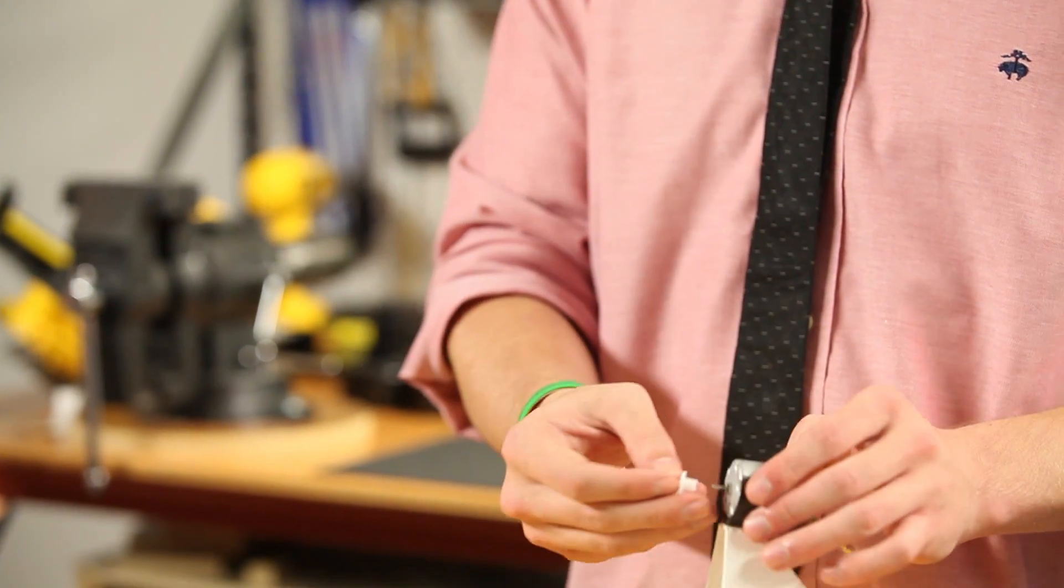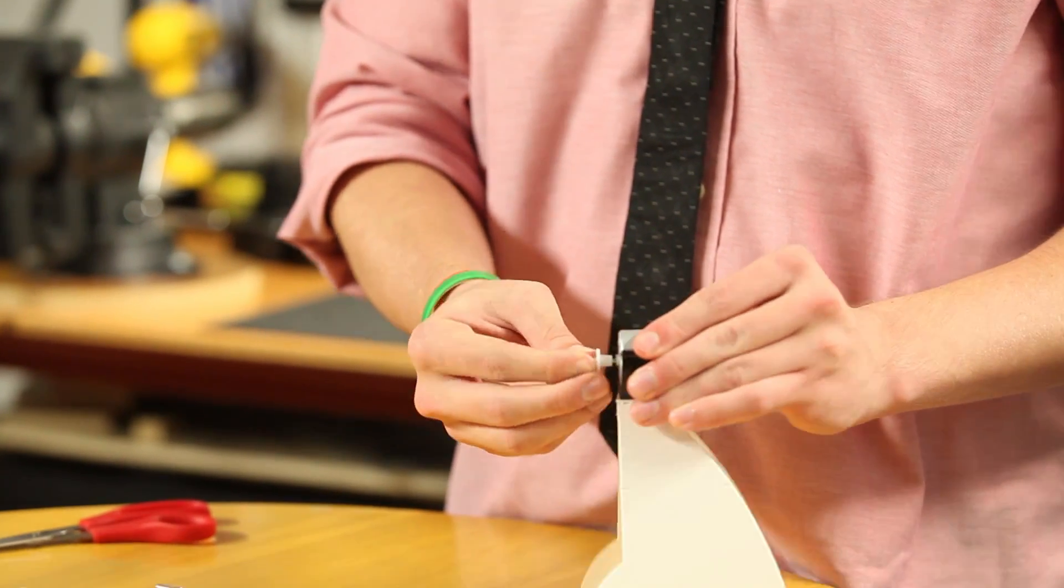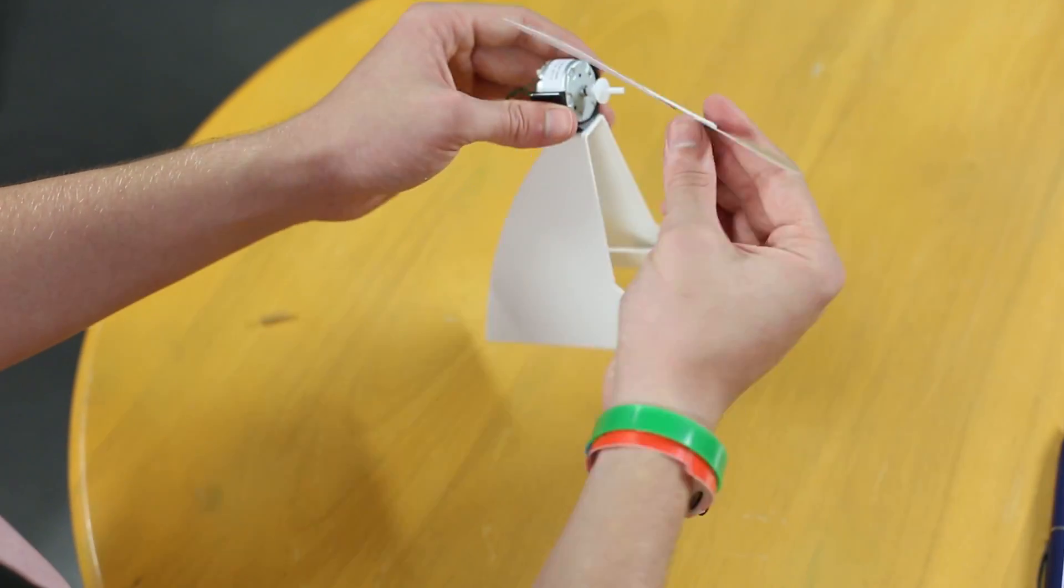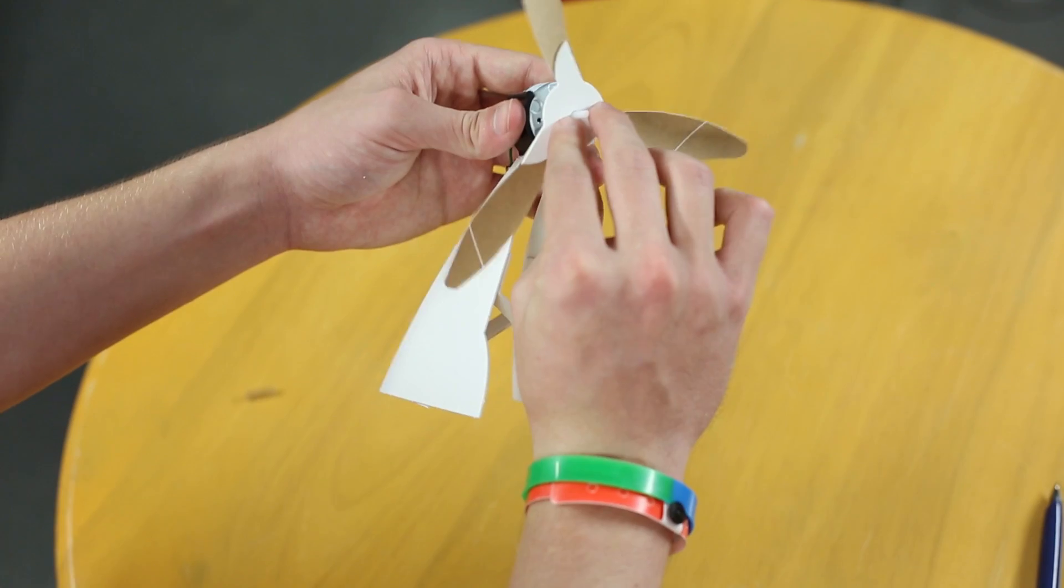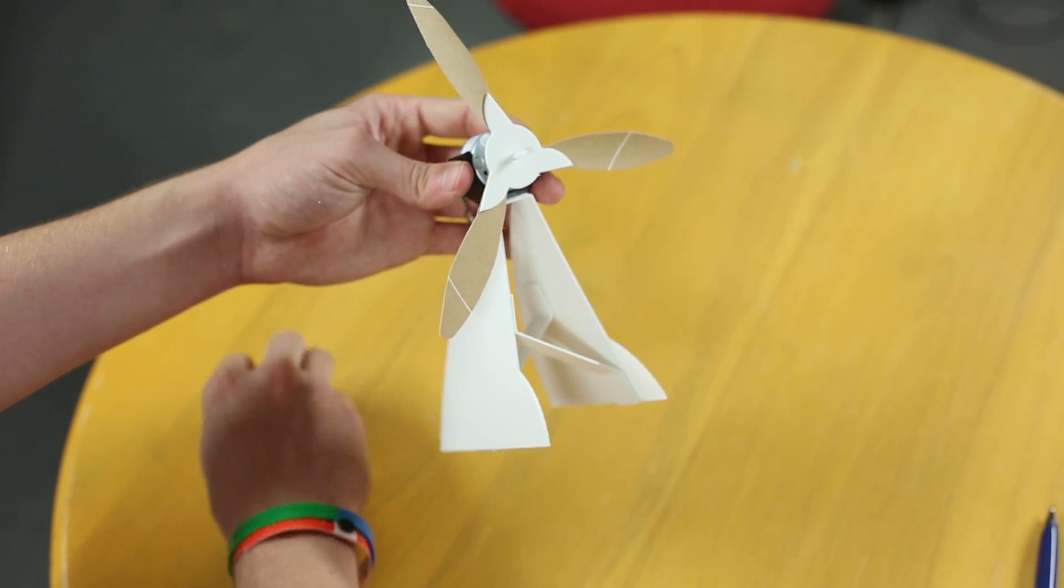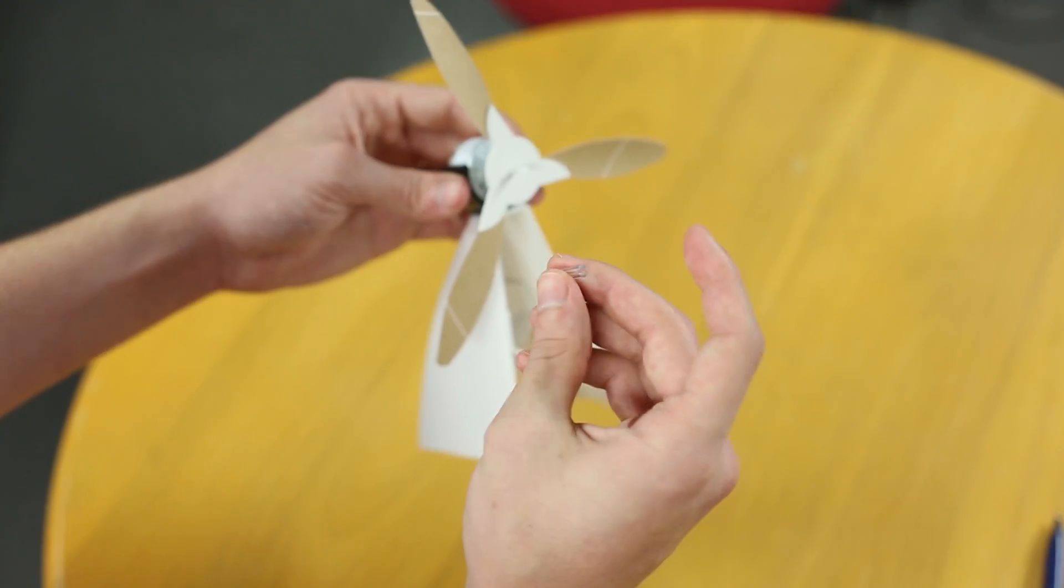Now push the prop hub onto the motor and then push the blade assembly onto the prop hub and secure it with a piece of vinyl tubing.